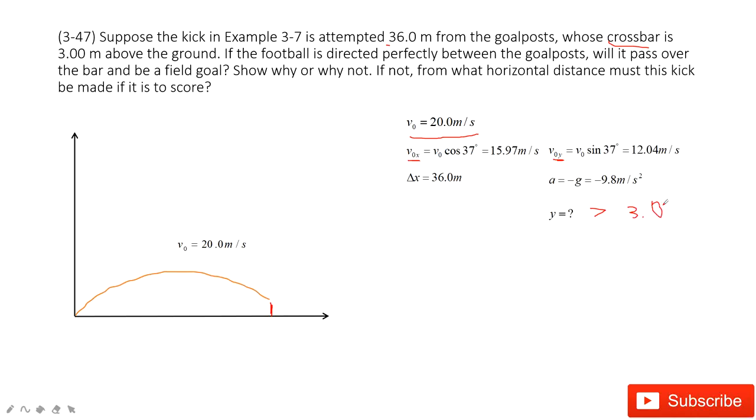So it looks like this problem asks us to find the position of this football at this bar's position and to determine whether it is larger than 3 or not. So in this case, we need to find the position. We know the initial velocity, we know the acceleration is due to gravity pointing down. If we want to find y, it looks like we need some other quantities: time t.